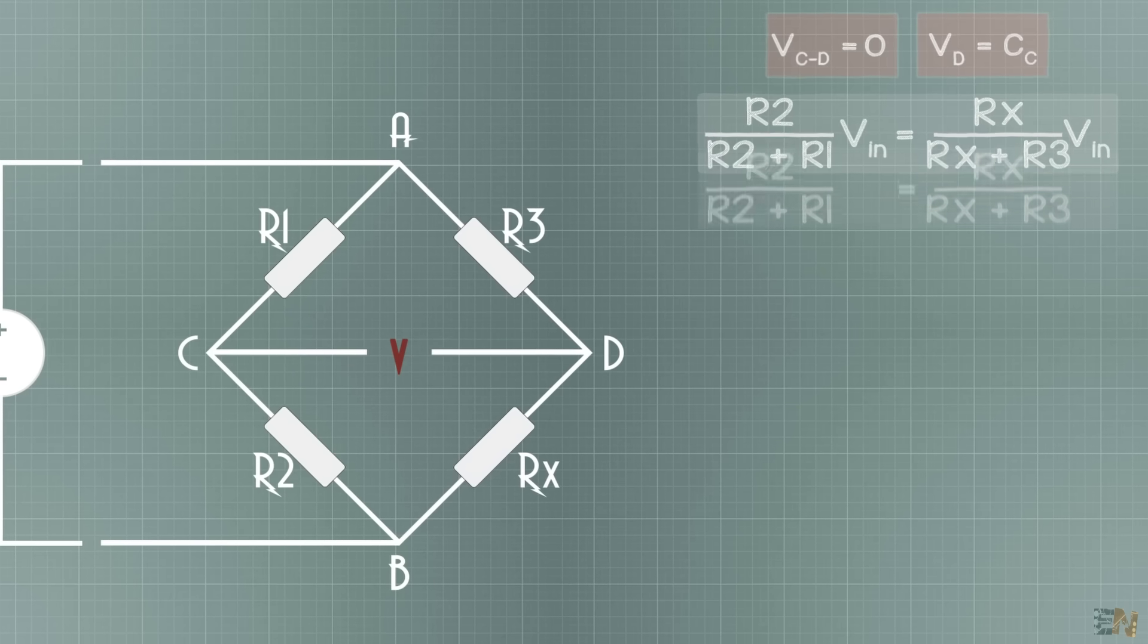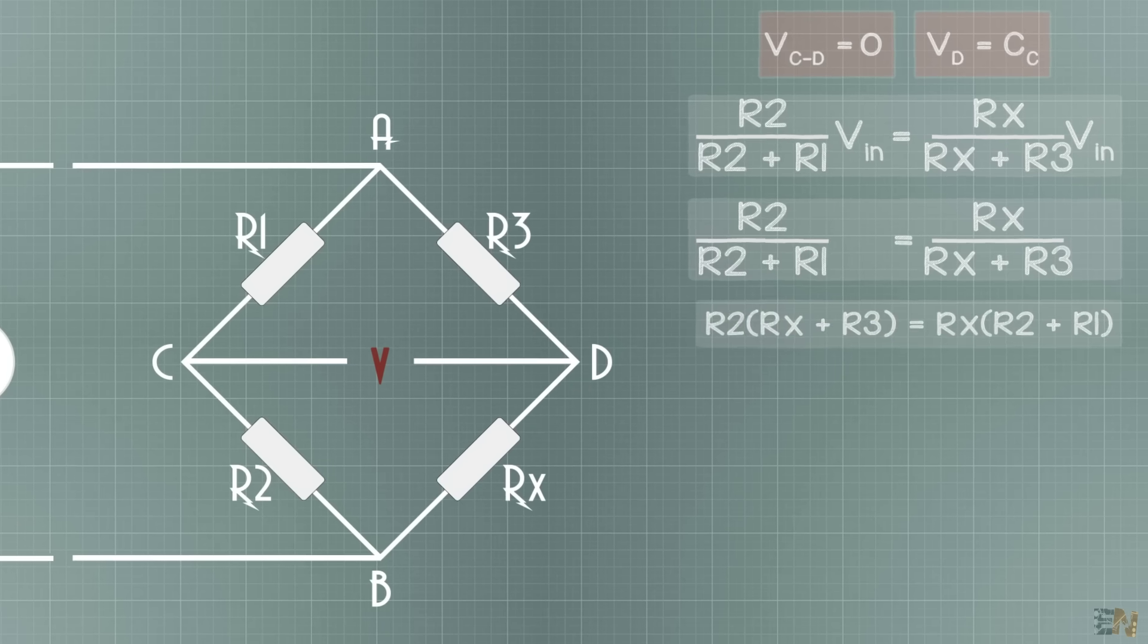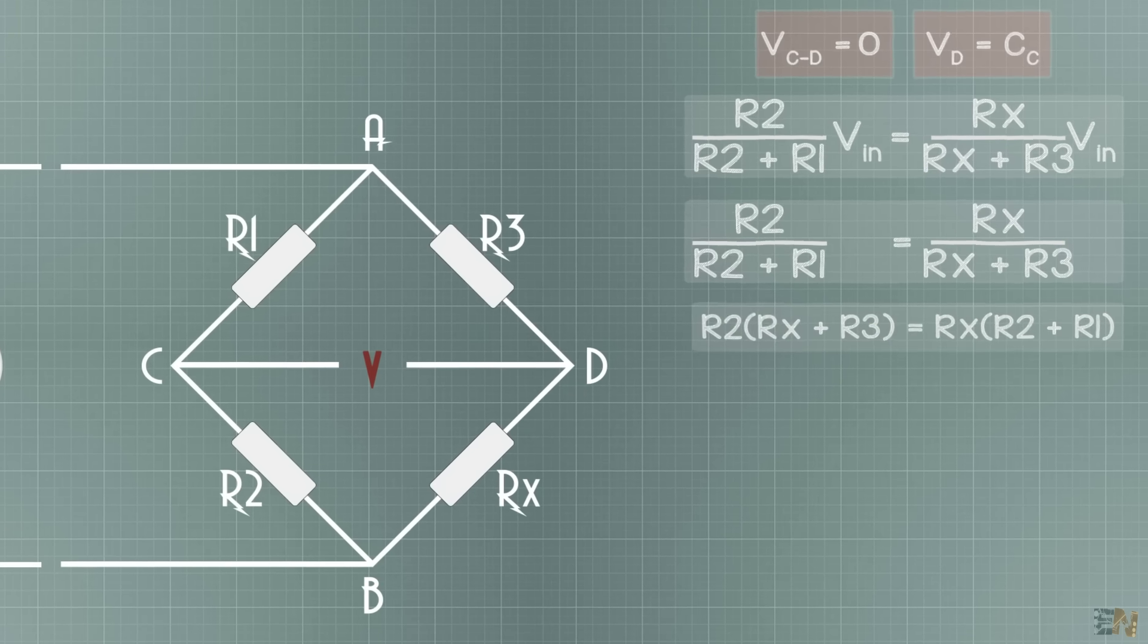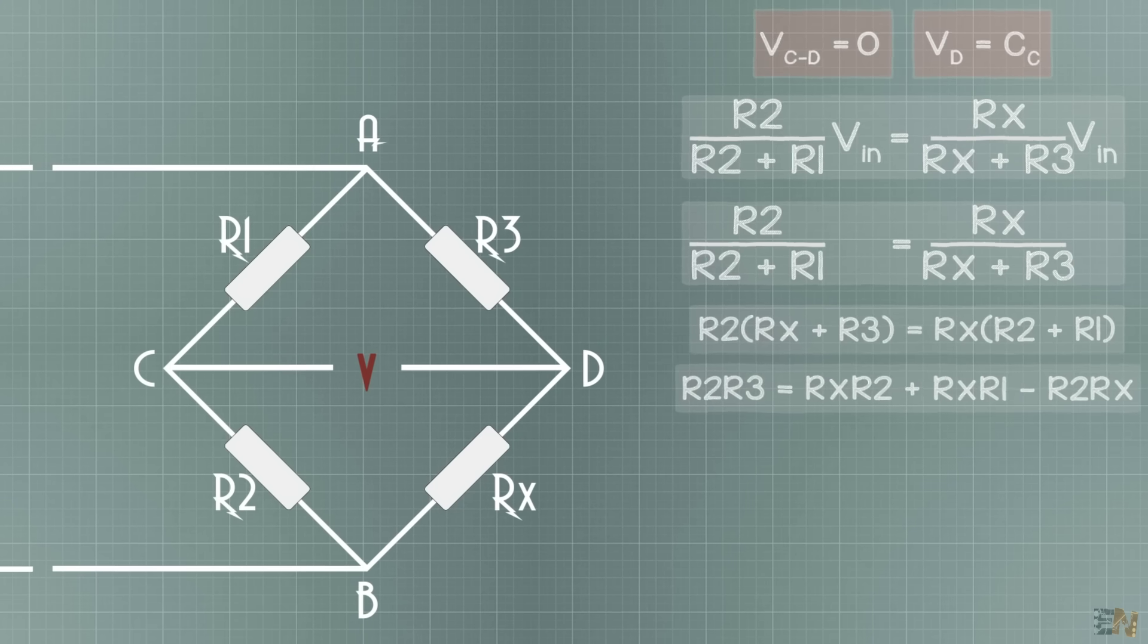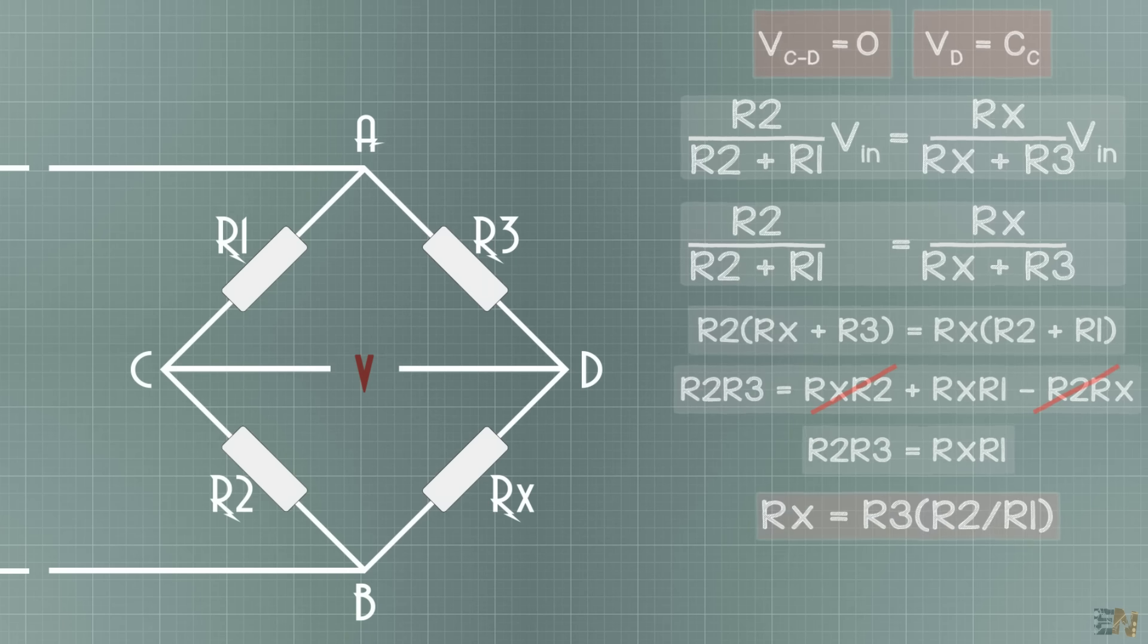So let's clean a little bit this equation. The Vin value is on both sides, so we can delete it. Now we cross multiply and we get this. We pass all the Rx elements to one side. We know that Rx*R2 minus R2*Rx is equal to zero. So we get that R2*R3 is equal to Rx*R1. So from this we get that the Rx is equal to R3 multiplied by the division between R2 and R1.